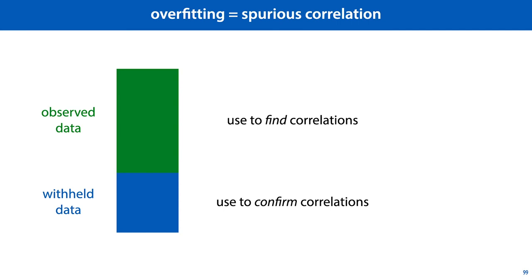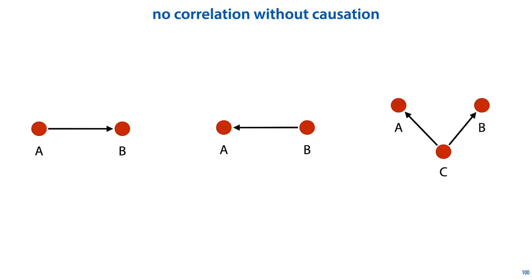How to make that distinction without access to the withheld data is the problem of induction. So if we rule out spurious correlations, what can we say that we have learned when we observe a correlation? If I see you have a runny nose, I can guess you have a cold. But that doesn't mean that having a runny nose causes colds. If I make the exam too difficult this year, it affects all grades, so somebody can predict from your failing grade that other students are also likely to have a failing grade. But that doesn't mean that you caused your fellow students to fail. This is the cardinal rule of statistics: correlation is not causation.